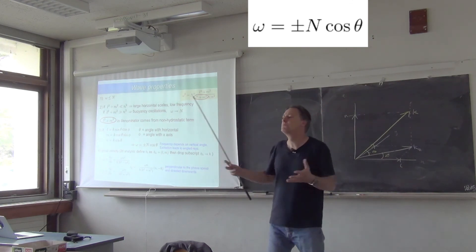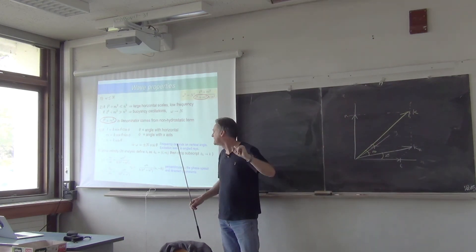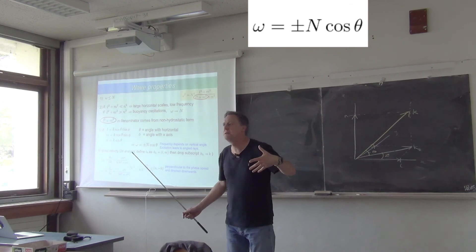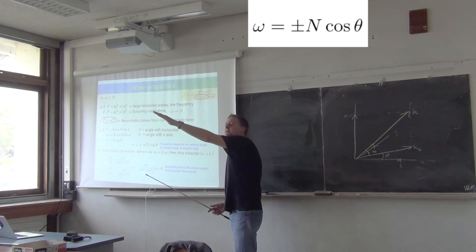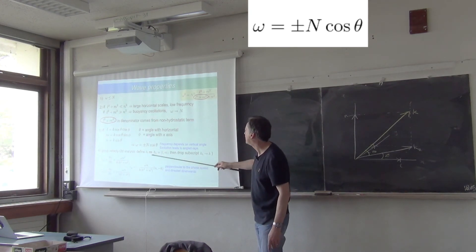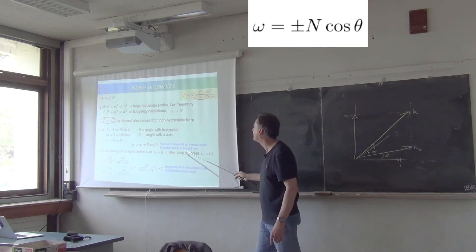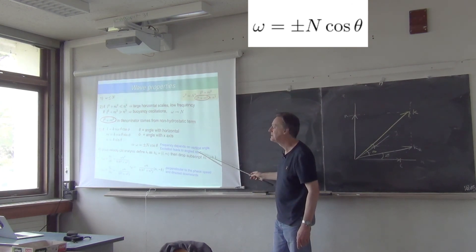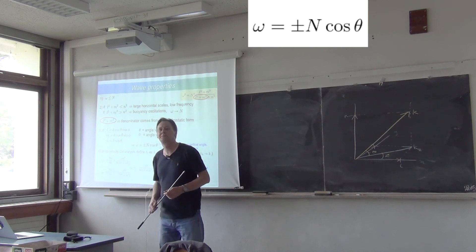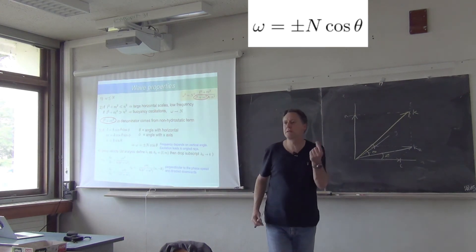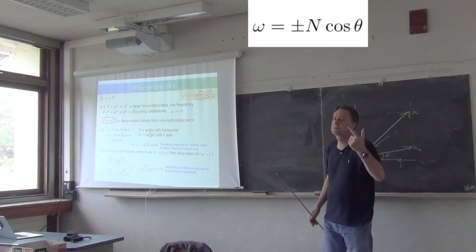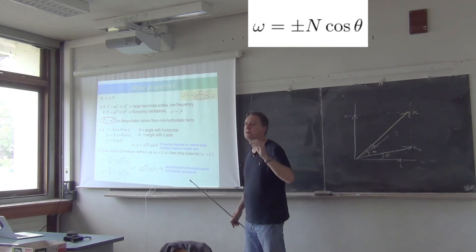So for a fluid with a given stratification, n, what that means is that if you know the frequency, so let's say it's forced at a certain frequency, then you can predict where it's going to go. You can predict the angle it's going to make with the horizontal. The frequency depends on the vertical angle. Excitation at a certain frequency will lead to angled rays, and you can calculate the angle of the ray. So that's one weird and exotic feature of internal waves. There's only two things you need to know. There's the stratification of the fluid, that's a geophysical parameter, and there's the forcing frequency or the frequency of the wave. And if you know those two things, you know where it's going to go.